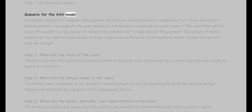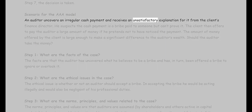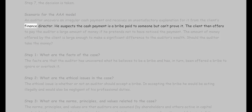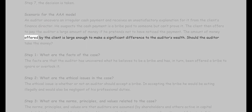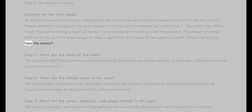Scenario for the AAA model: An auditor uncovers an irregular cash payment and receives an unsatisfactory explanation for it from the client's finance director. He suspects the cash payment is a bribe paid to someone but can't prove it. The client then offers to pay the auditor a large amount of money if he pretends not to have noticed the payment. The amount of money offered by the client is large enough to make a significant difference to the auditor's wealth. Should the auditor take the money?